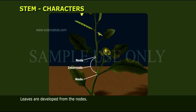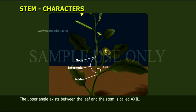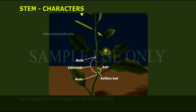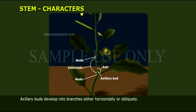Leaves are developed from the nodes. The upper angle between the leaf and the stem is called the axil. The axillary buds are developed in the axil of the leaf. Axillary buds are developed into branches either horizontally or obliquely.